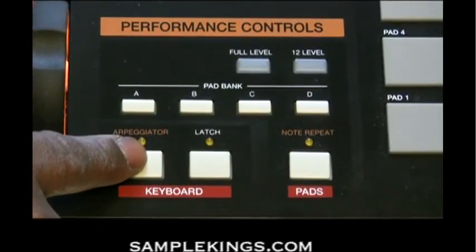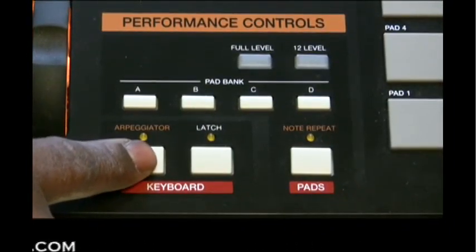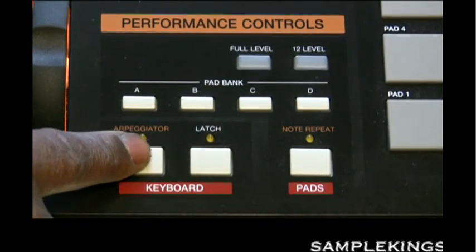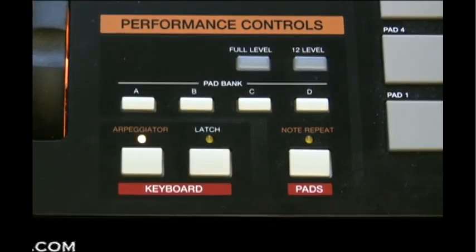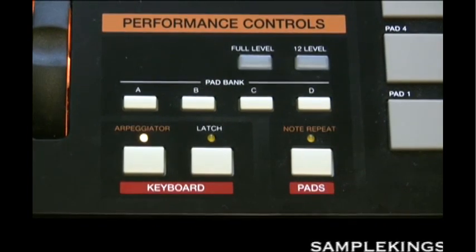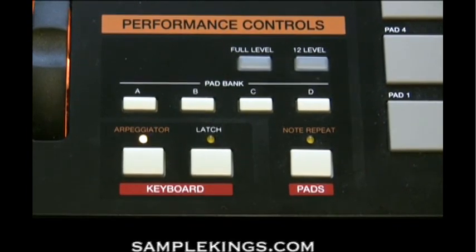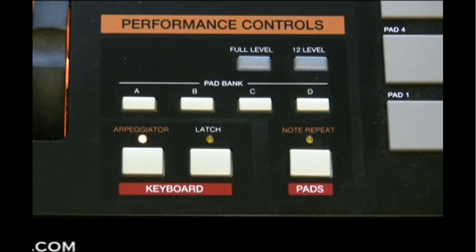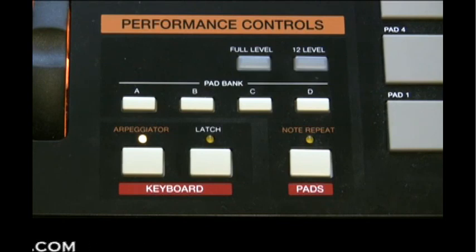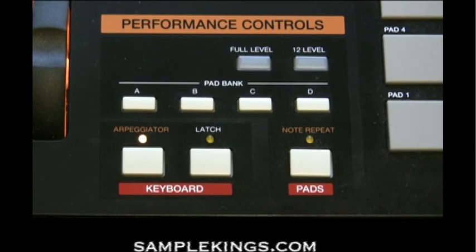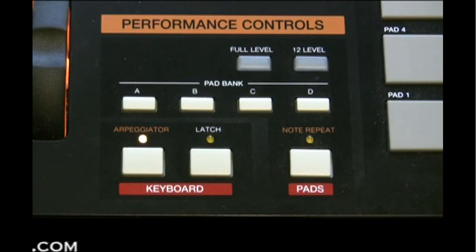Here we have our arpeggiator button, which enables you to turn it on and off. The arpeggiator functions on notes being played on the keyboard — you play a chord and it will arpeggiate that chord, playing one note at a time according to the tempo and time division setting, whether quarter notes or eighth notes. It works primarily with an external MIDI clock source, like a digital audio workstation or a MIDI device.